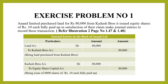This problem is very much related to Illustration 2, which is on page numbers 1.47 and 1.48. In the problem, we will have an asset purchase — 80,000 rupees worth of asset — from Kailash Bros by Anand Limited.